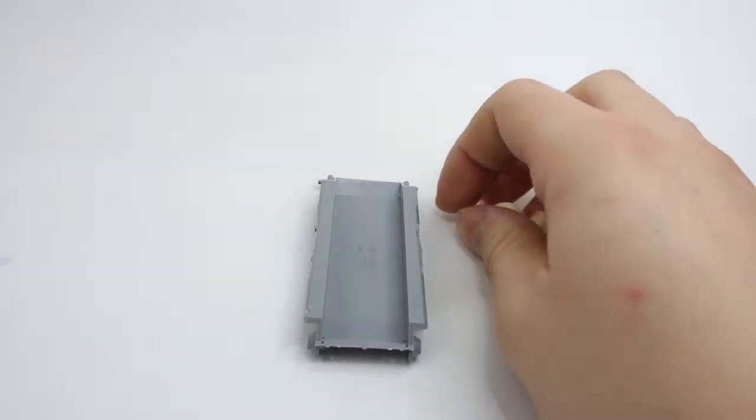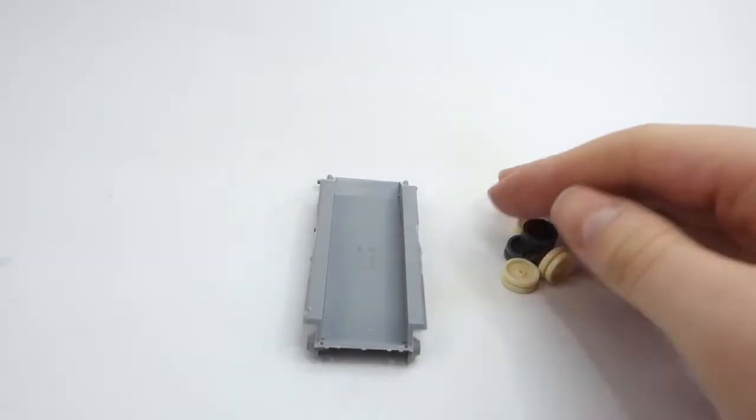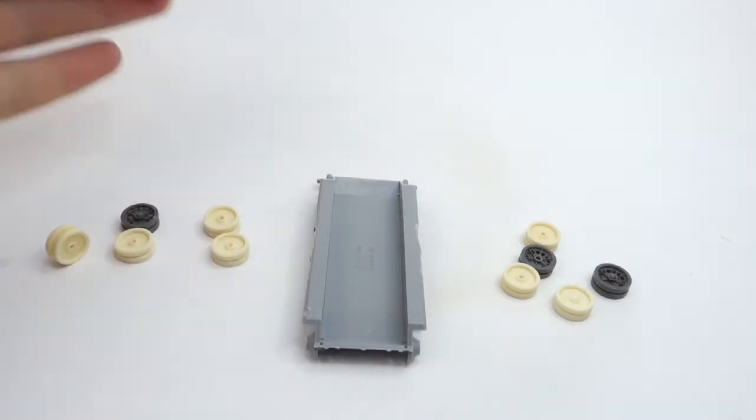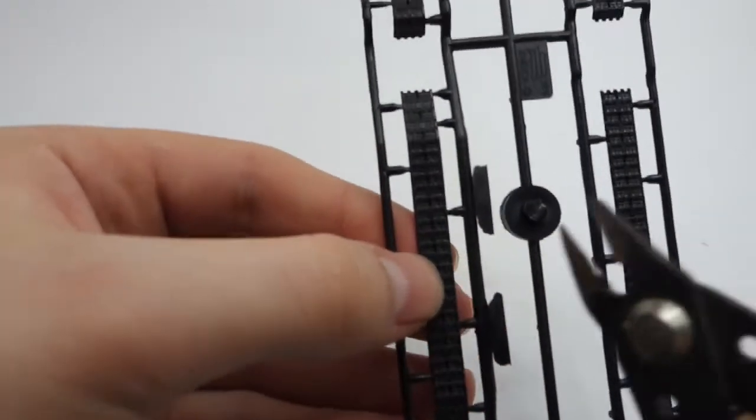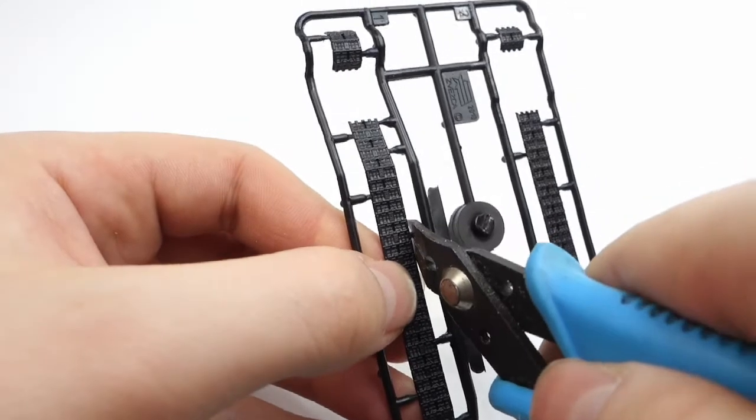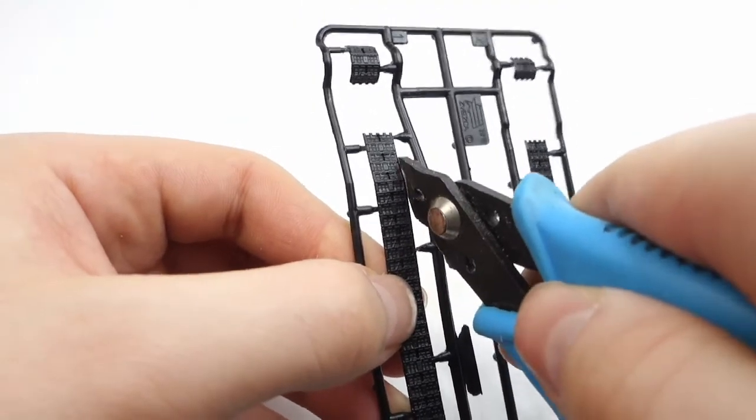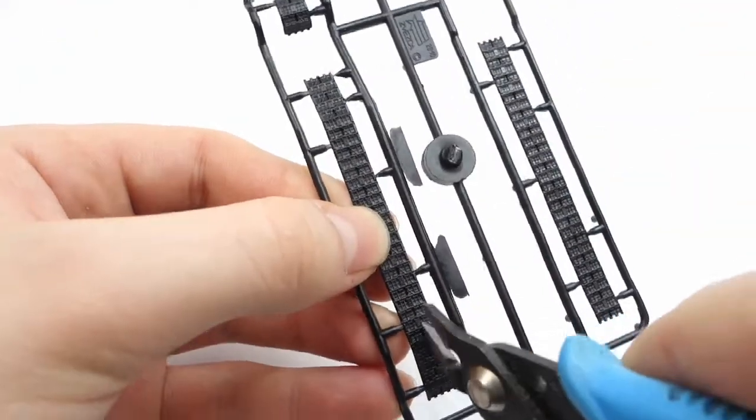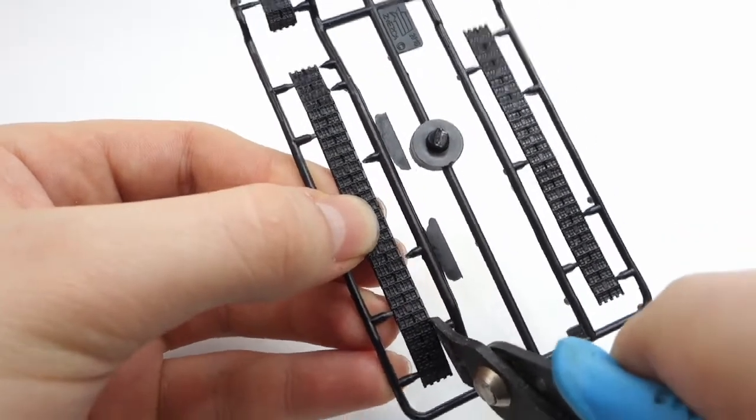And here I have completed wheels for both sides of the vehicle. The tracks in this model come in sections rather than single long parts we could see in SU-85, which makes their assembly more complicated.